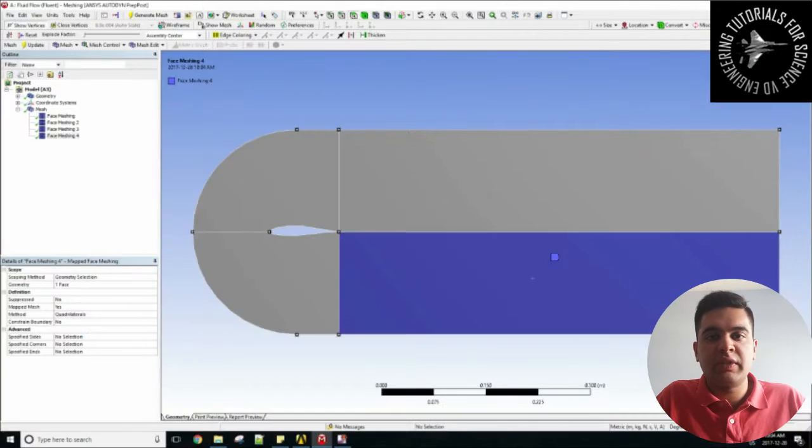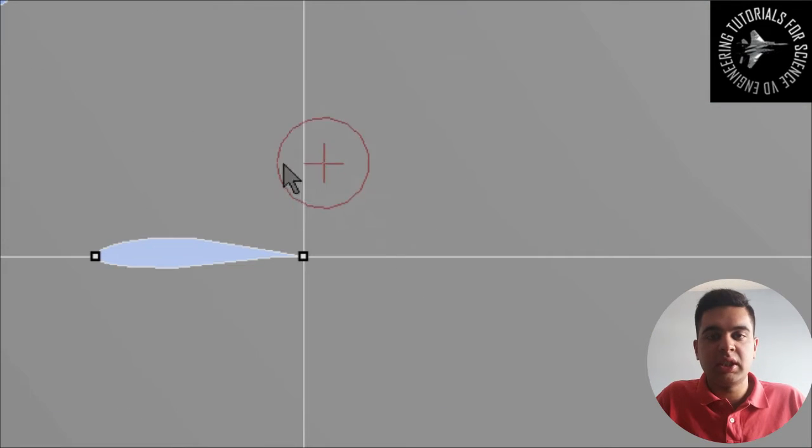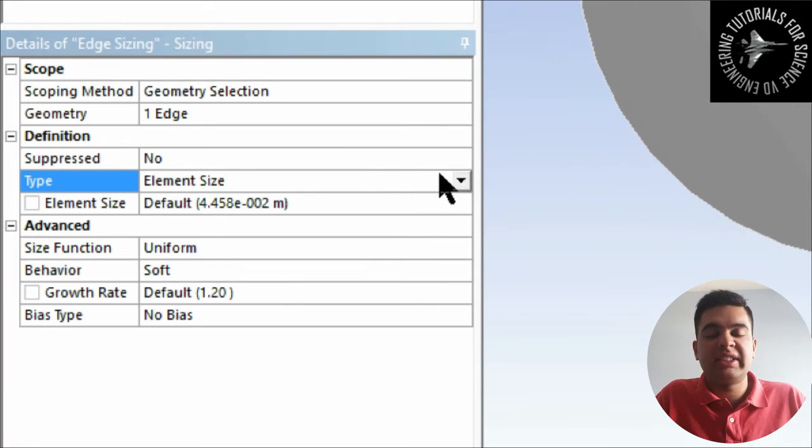The next thing you want to do is to go in your meshing feature in your CAD software, for this case it is ANSYS, and you will have to use your face meshing feature to do this. The last thing you want to do is to add an edge sizing.